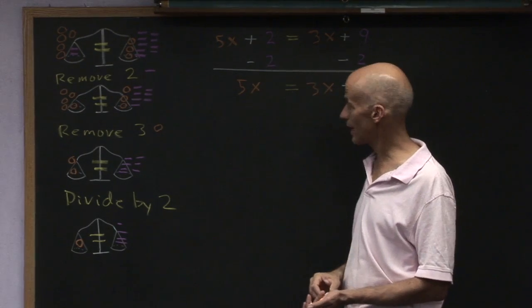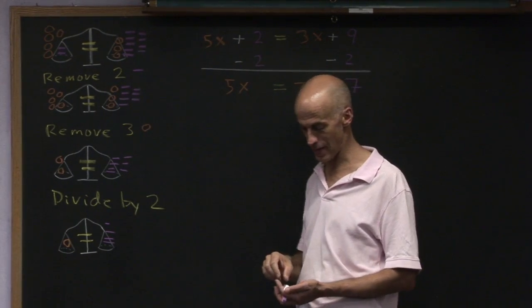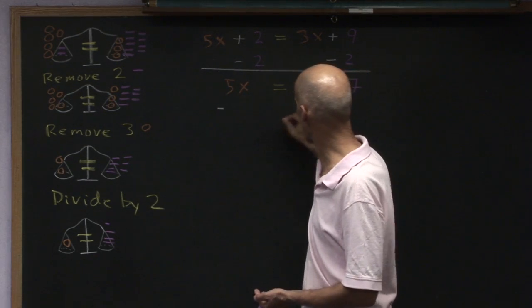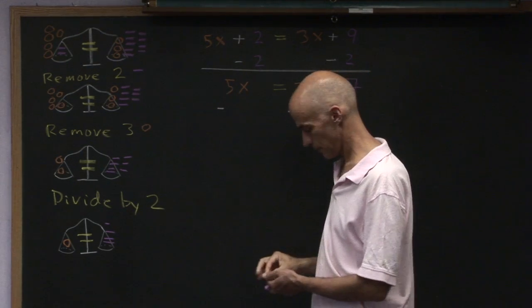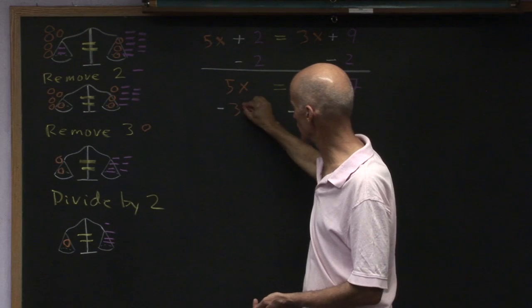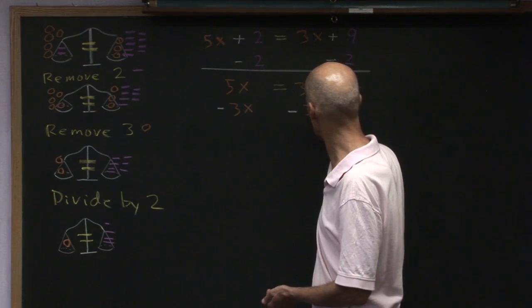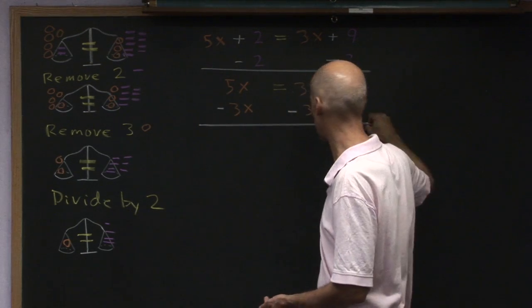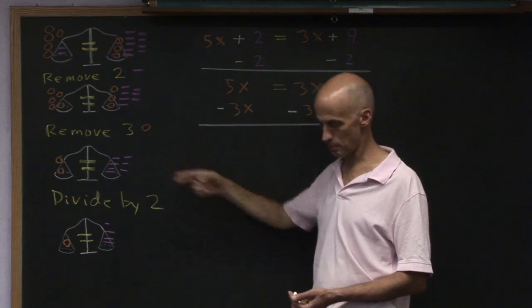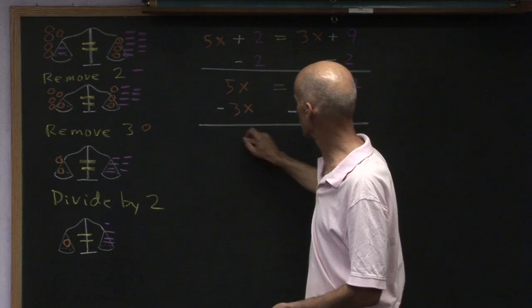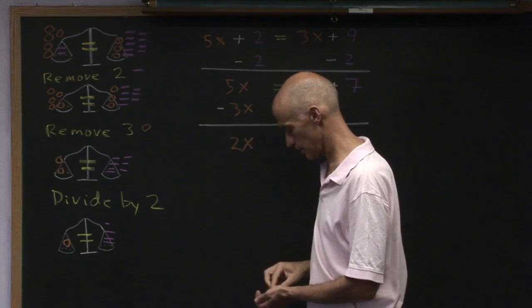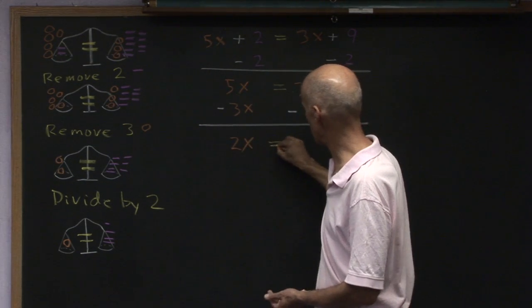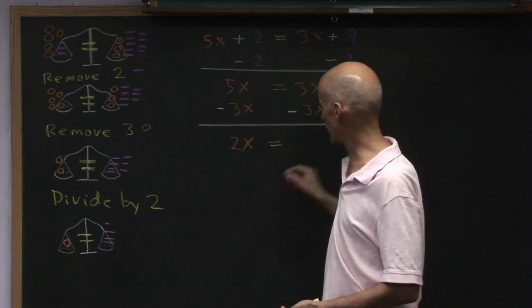And then in the next step, what did I do? I removed three sacks. So I'll represent that by subtracting from each side three X's. And the result of doing that is that I ended up with two sacks, as we see here, is going to be equal to seven hex nuts.